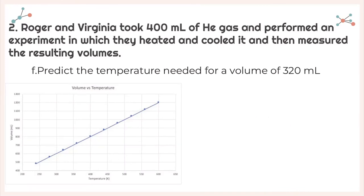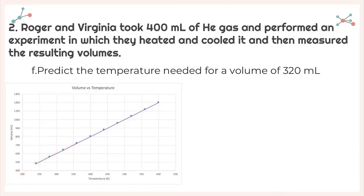Again, it says predict the temperature needed for a volume of 320 milliliters. On my graph, anything below 400 I can't see directly, but because of this linear relationship, I can continue extrapolating data and see where I would land at 320 milliliters. Extending my line, I would get a temperature of about 160 degrees Kelvin. You can double check with your table and your graph and see if you got the same thing.